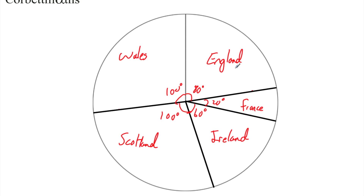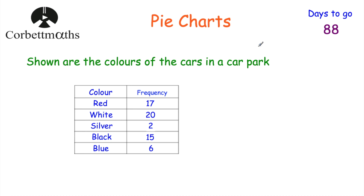That's how you draw a pie chart! For some practice, here's a table showing the colors of cars in a car park: red, white, silver, black and blue with their frequencies. Work out the size of each angle for each color — what would the angle be for red, white, silver, black and blue — and then if you have a protractor and compass, feel free to draw the pie chart.